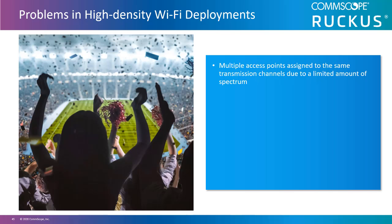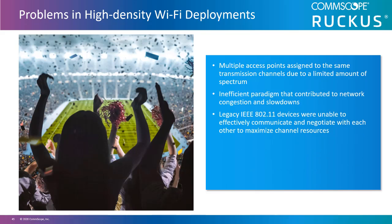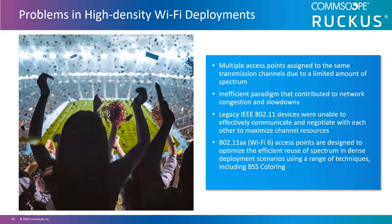Legacy high-density Wi-Fi deployments typically have multiple access points assigned to the same transmission channels due to a limited amount of spectrum, which is an inefficient paradigm that contributes to network congestion and slowdowns. In addition, legacy IEEE 802.11 devices are unable to effectively communicate and negotiate with each other to maximize channel resources. 802.11ax or Wi-Fi 6 access points are designed to optimize the efficient reuse of spectrum in dense deployment scenarios using a range of techniques including BSS coloring.